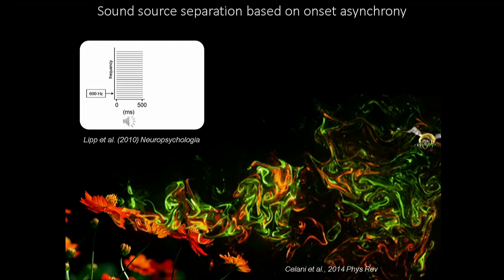Here's an auditory example. We have 24 sounds that all start at the same time — you hear one sound. Now we delay one frequency, 600 Hz, by 160 milliseconds — you should hear two sounds. You could think of these sounds as odorants: all those starting synchronously come from one source, and the delayed one comes from another source. Stimulus-wise it's a very good analogy. But is it a good analogy for an olfactory segregation mechanism? Now you have to imagine you are an insect.